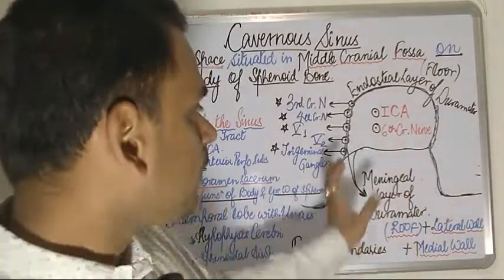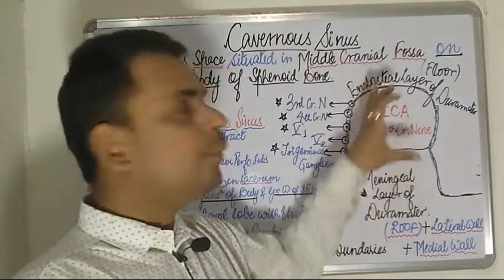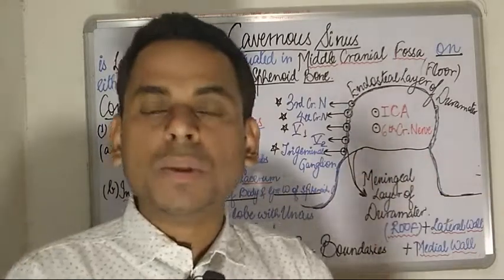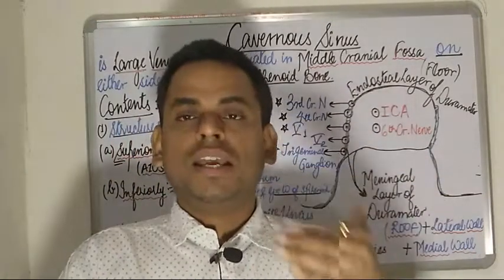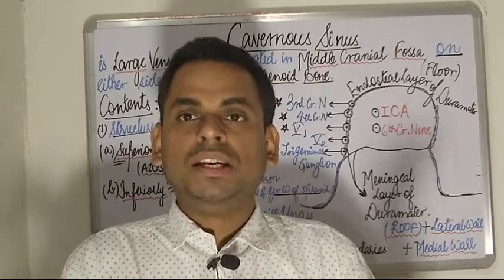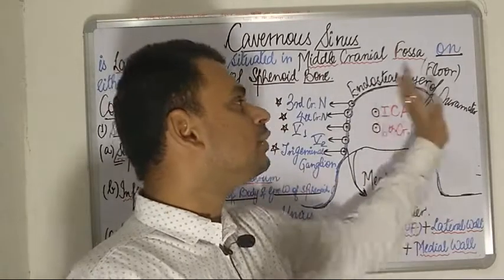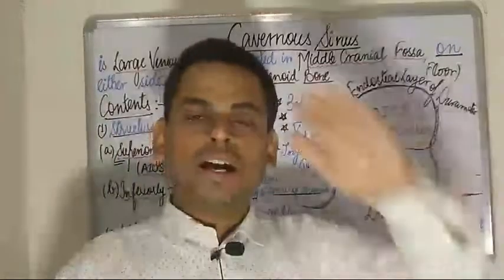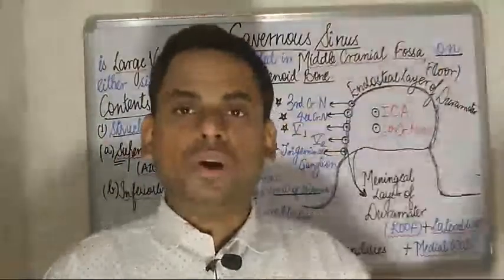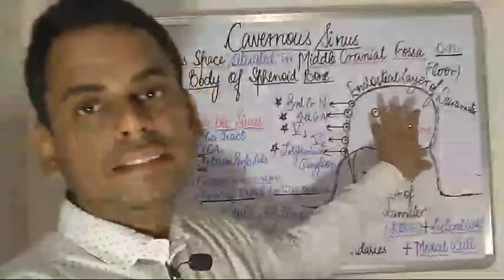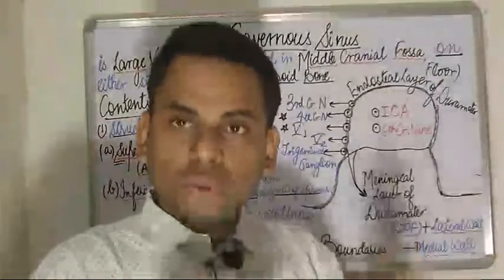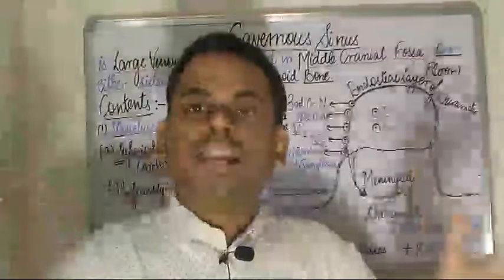Since the cavernous sinus is a large venous space, any space is bounded similarly to a room. Just as a room has a floor, a roof, and lateral walls, each cavernous sinus is going to have a roof, a floor, and lateral walls.